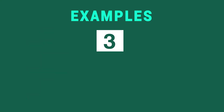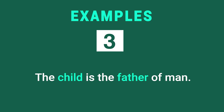Example number three: 'The child is the father of man.' Child and father are two opposite words and ideas, and it will make you think: how can a child be a father of man? It makes you reflect on the wittiness of the statement and the truth that it unfolds.